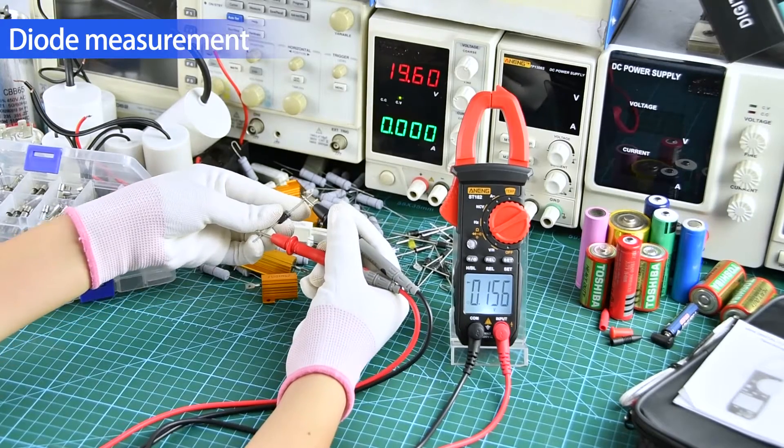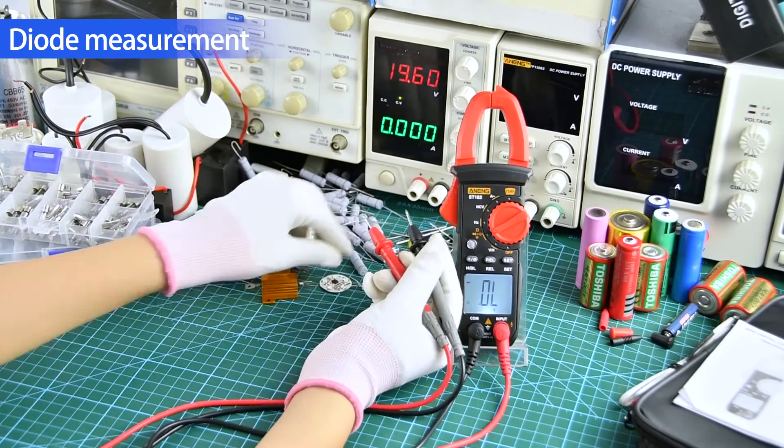Diode measurement - the positive or negative poles need to be aligned.